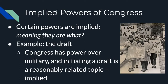Next are our implied powers. We have covered express powers, and certain powers are implied — meaning they are not written into the Constitution as a power of Congress. A great example is the draft. Congress has power over the military and the option to initiate a draft, and has a rule that males at age 18 must sign up for the draft in case one is ever initiated. Initiating a draft is not specifically in the Constitution, but it is reasonably related to Congress's express war powers, meaning it falls within the bounds of the necessary and proper clause — our elastic clause.